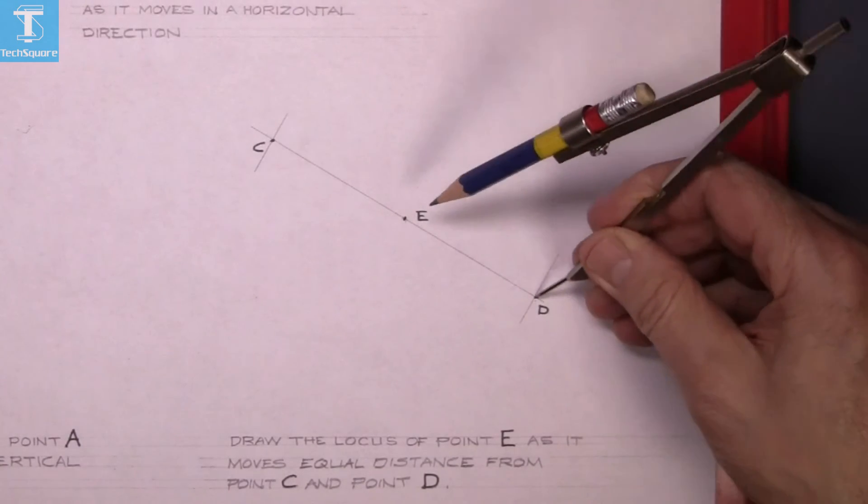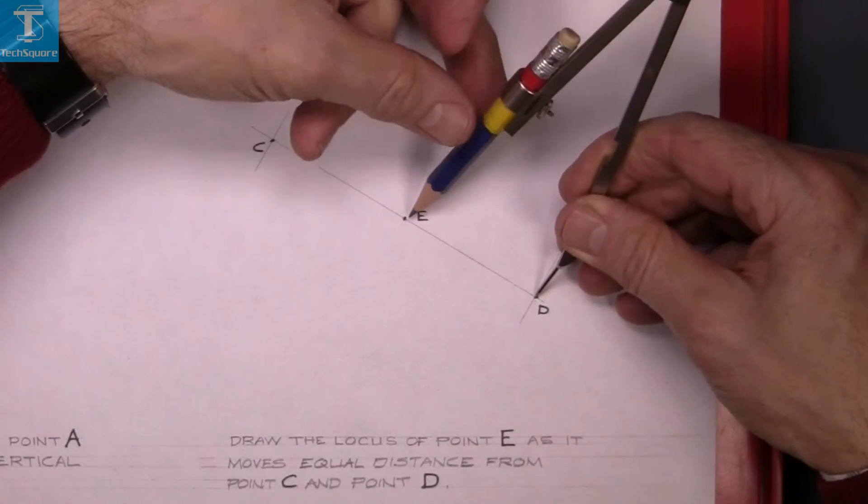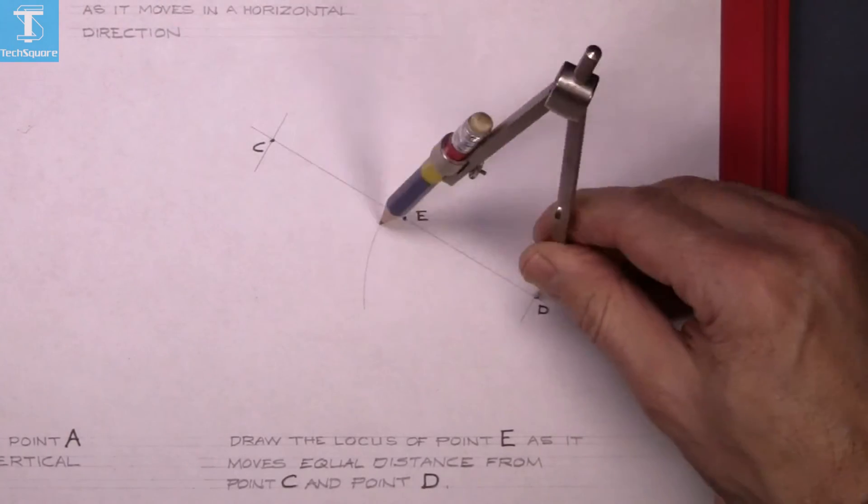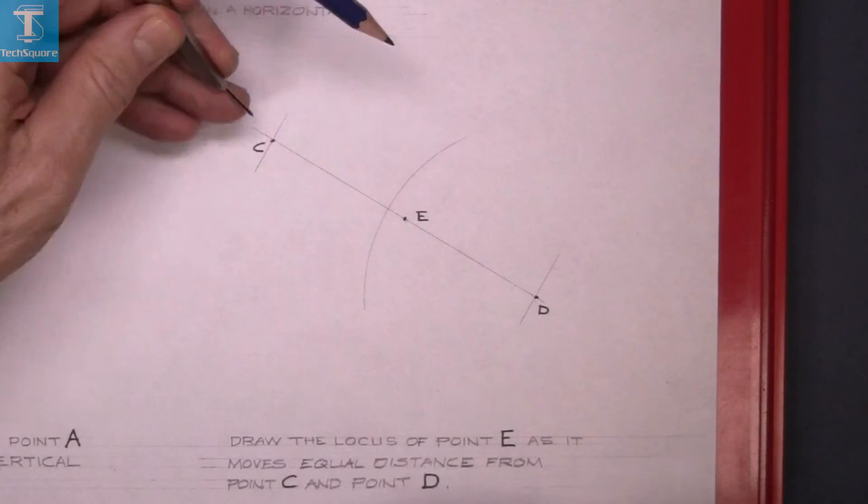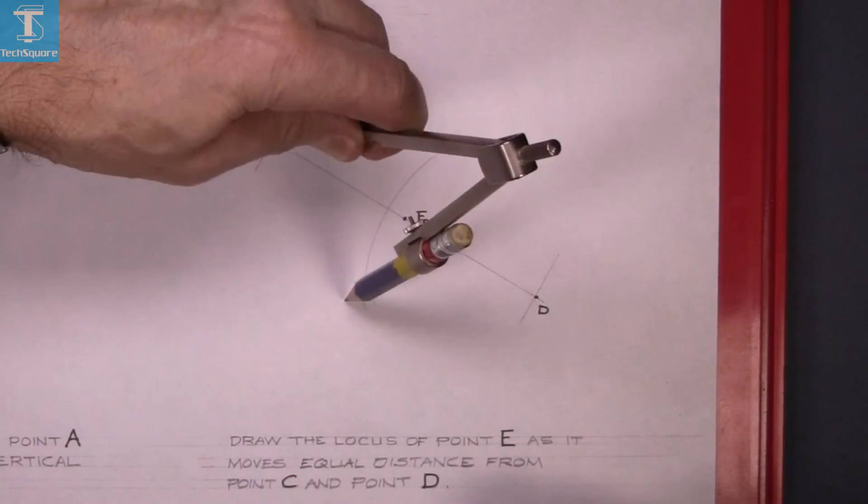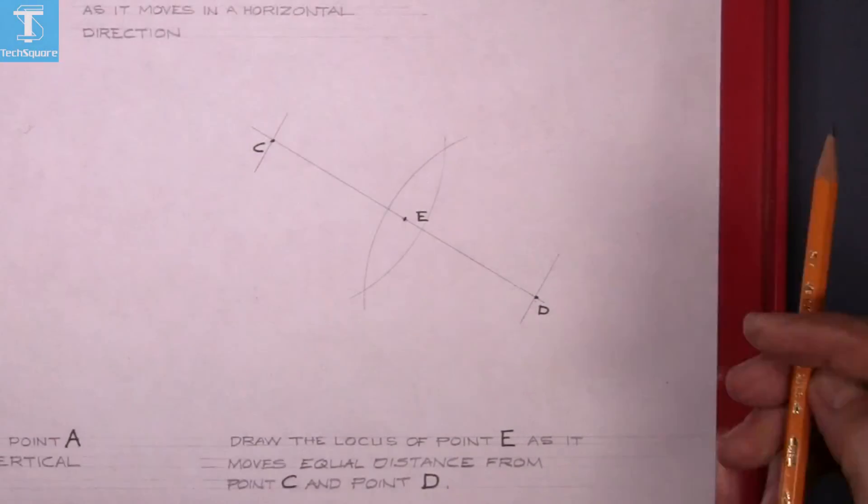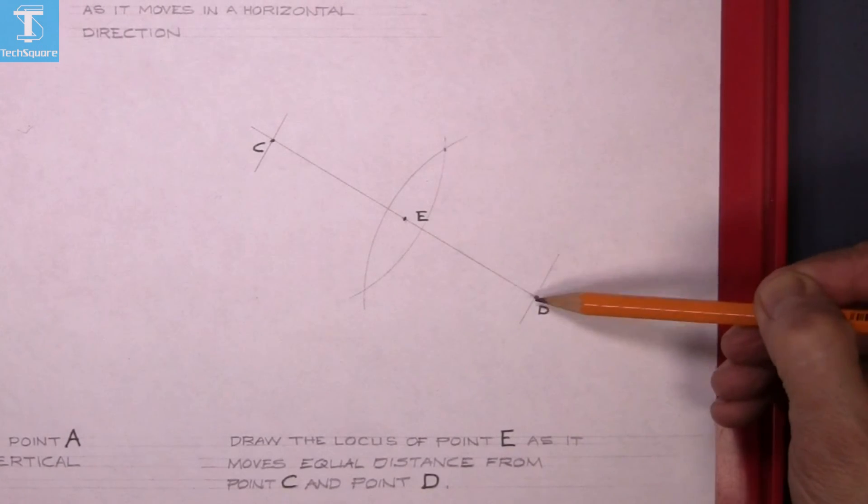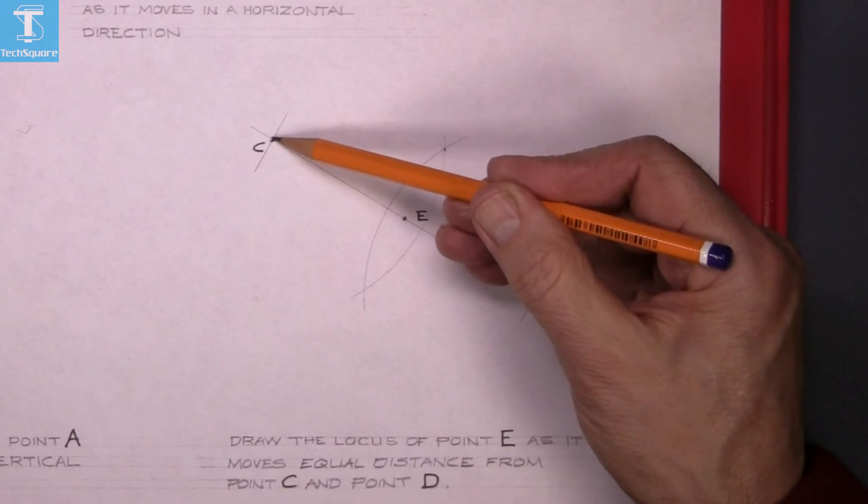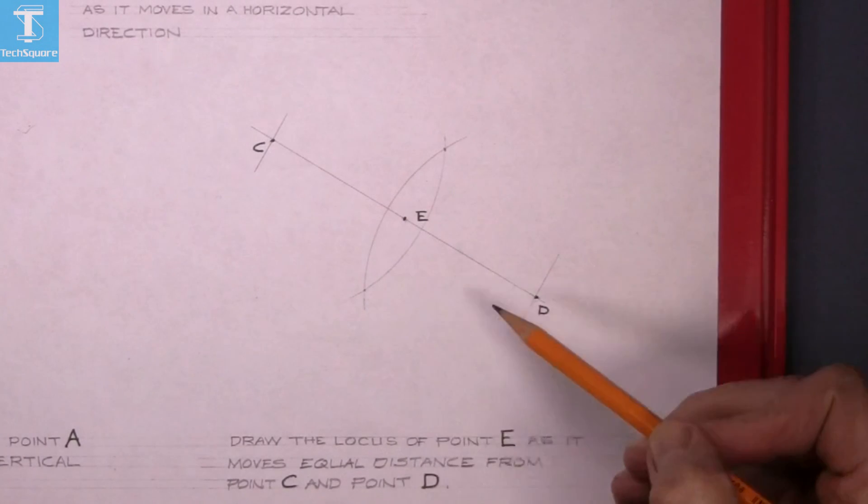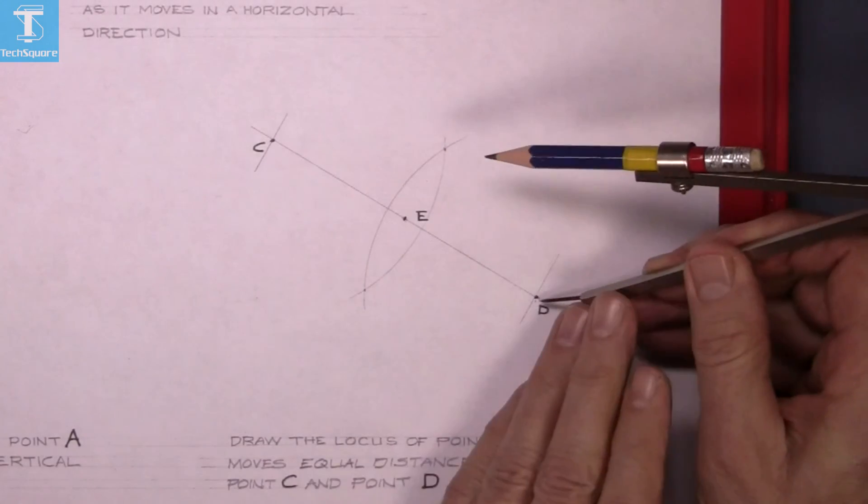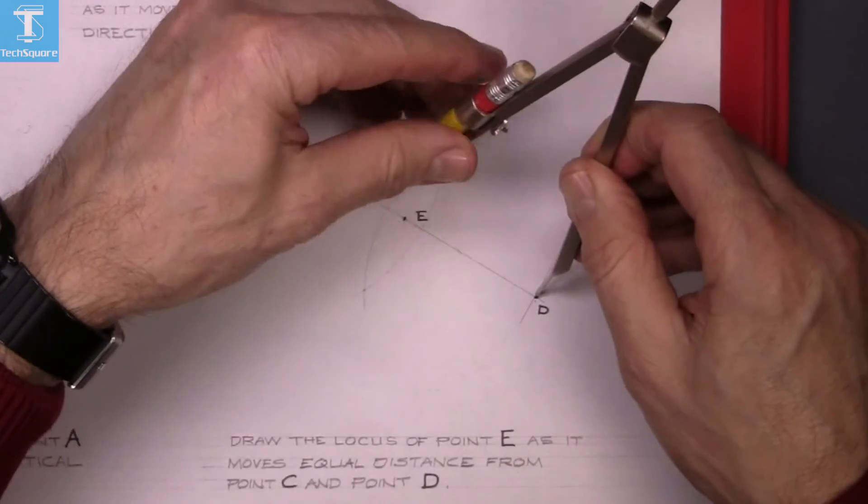So we set the compass to a measurement here. And we'll draw an arc. Now that's the distance from D. Now do the same on the other side. So we have found two points now that's the same distance from D as it is from C. So there are two points on the line that we're looking for.